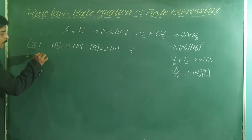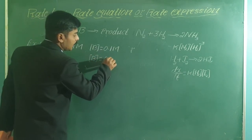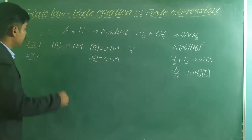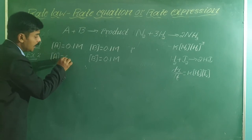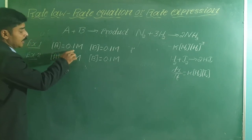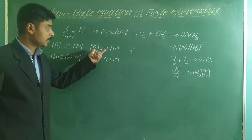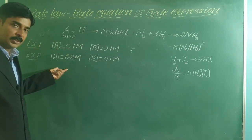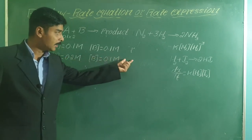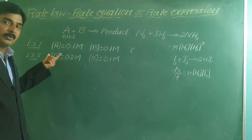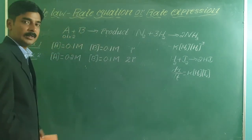In experiment 2, I keep [B] = 0.1 M unchanged but double [A] to 0.2 M. Since [B] is fixed, any change in rate is due to [A] only. The rate is found to be 2R — the rate is doubled when the concentration of A is doubled.